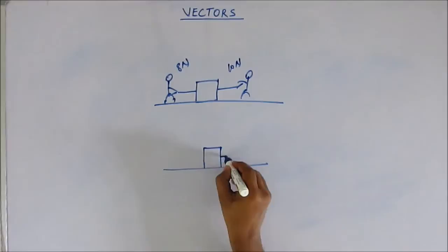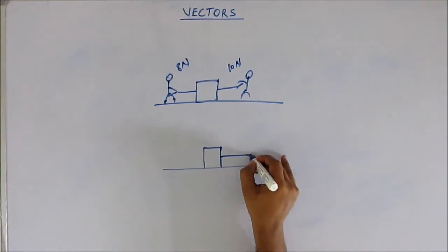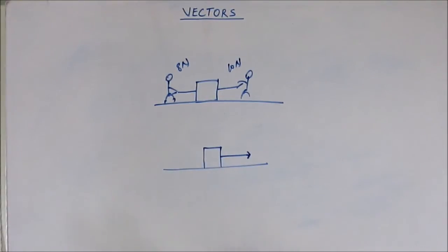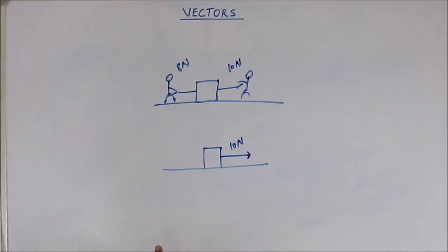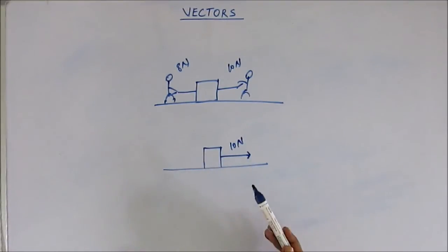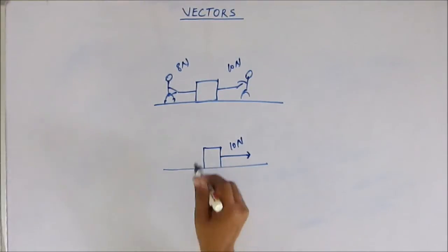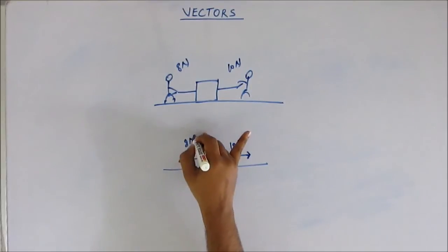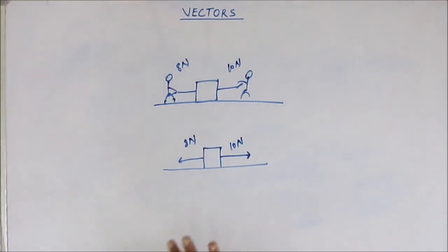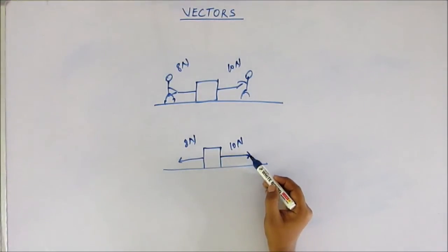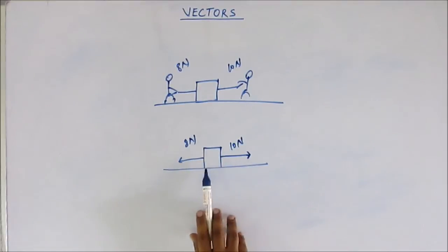The force applied by one person is to the east at 10 Newton, so we draw a line of arbitrary length with an arrow — the same kind of arrow we use at the top of a letter representing a vector — and write 10 Newton. For the other person applying 8 Newton in the opposite direction, we draw an arrow in the opposite direction. The key point is: if you used a certain length for 10 Newton, then proportionally you must use a shorter length for 8 Newton. So the length of the vector drawn should be proportional to its magnitude.